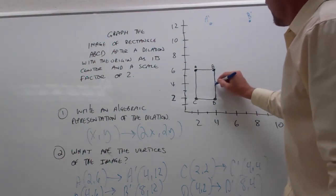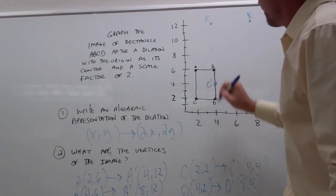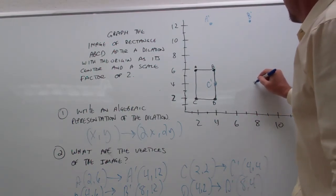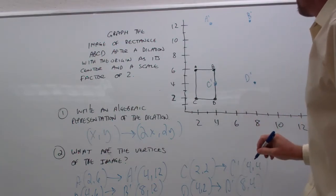When x is 4, y is 4, is where we'll find C prime. And when x is 8, y is 4, is where we have D prime.